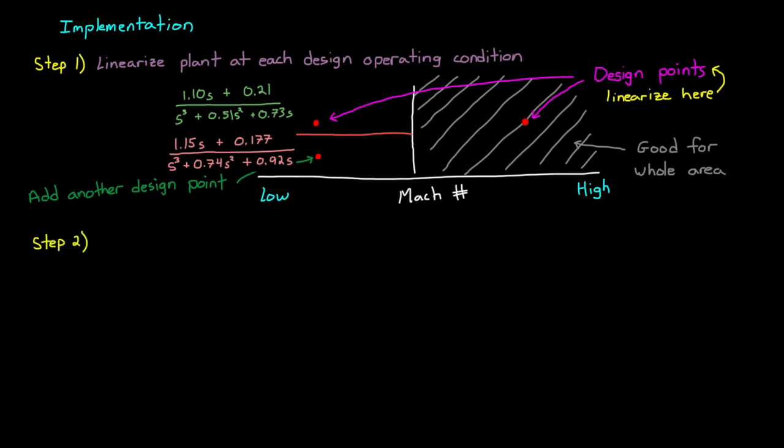Now that we have our linear models, step two is to tune the controller gains for each one. Basically, instead of a single design problem, we've expanded it to as many design problems as there are design operating points. For our example, we're using a PID controller, so we would tune each one in the same way we would tune any other PID controller. The nice part about having many different smaller control problems is that the requirements do not need to be the same for each design point. You may choose different requirements because of feasibility concerns or just because you want the behavior to be different.